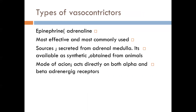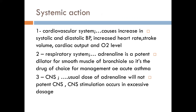Now let's go to the types of vasoconstrictor and what types we use. The most effective and commonly used vasoconstrictor in local anesthesia is epinephrine (adrenaline). It is the main secreted form from our adrenal glands. It is adrenergic, either synthetic or obtained from animals, and it acts directly on both alpha and beta adrenergic receptors.